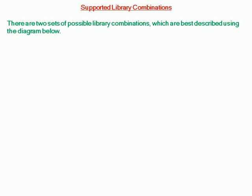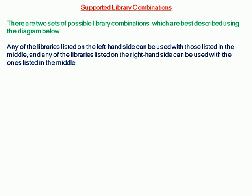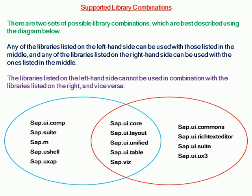Supported library combinations: there are two sets of possible library combinations, best described using a diagram. Any of the libraries listed on the left-hand side can be used with those listed in the middle. Any of the libraries on the right-hand side can also be used with those in the middle. However, libraries on the left-hand side cannot be used in combination with libraries on the right-hand side, and vice versa.